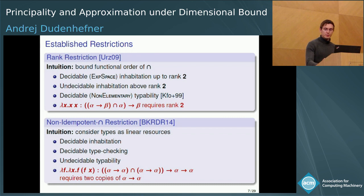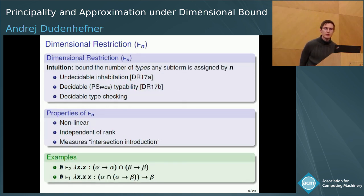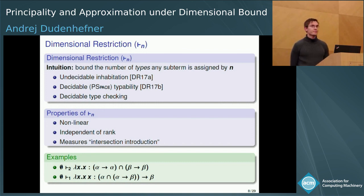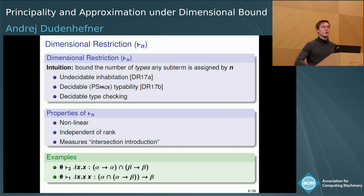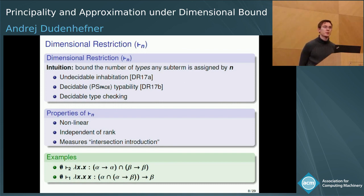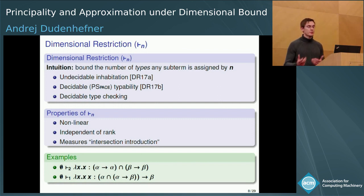Let's look at a different restriction introduced two years ago at POPL '17: the dimensional restriction. I will not give the full definition, but just to give you the intuition — the dimensional restriction does not try to restrict the types themselves but tries to restrict the type assignment or the actual type derivation. Once you have a type derivation you can measure how much intersection reduction is performed by the type, and since intersection reduction is the most interesting part of the intersection type system, this measure is one of the more interesting ones. We restrict the type system with respect to some upper bound n, where n measures how many types some subterms are assigned in a given type derivation.